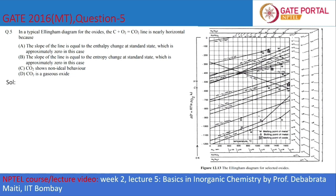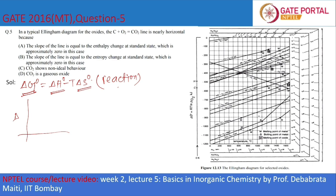First we will consider the standard equation: ΔG° = ΔH° - TΔS°, where ΔG° is the standard Gibbs free energy change, ΔH° is the standard enthalpy change, and ΔS° is the standard entropy change for any particular reaction. If we plot ΔG° versus T, we get a line whose slope is minus ΔS°. So if ΔS° is positive, the slope is negative, and if ΔS° is negative, the slope is positive.